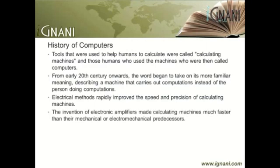The invention of electronic amplifiers made calculating machines much faster than their mechanical or electromechanical predecessors. Vacuum tube, or thermionic valve, amplifiers gave way to solid-state transistors, and then rapidly to integrated circuits, which continue to improve, placing millions of electrical switches — typically transistors — on a single elaborately manufactured piece of semiconductor the size of a fingernail. By defeating the domination of numbers, integrated circuits made high-speed and low-cost digital computers a widespread commodity.